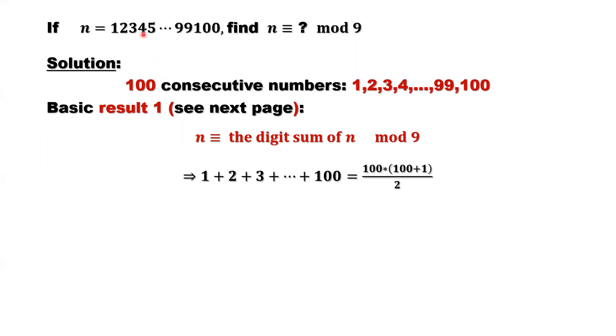The original is 1, 2, 3, 4, until 100. Right now, we can change it to what? 1 plus 2 plus 3 plus 4, until 100.